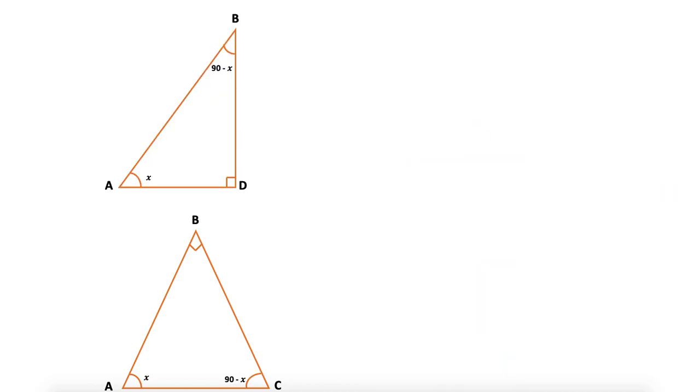To understand the theorem, if I consider the two triangles ABD and BAC, both triangles are similar. Now the property is that the ratio of sides are constant for the respective corresponding angles. So if I consider X in the upper triangle, in front of X I have BD. In the lower triangle in front of X, I have BC. So BD over BC.